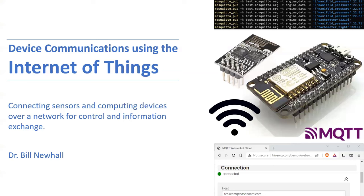The title of this section is Device Communications using the Internet of Things. If you have a system, project, or product that needs to get information from a sensor, broadcast information, connect to another computer system, or communicate sensor data and command-and-control without wires running to a test setup, the Internet of Things is a good approach to look at.